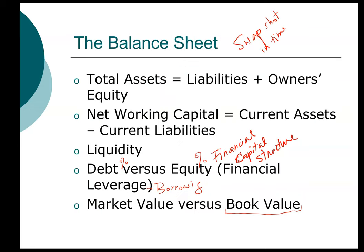That brings us back to the concept of book value. Book value is the value presented on the balance sheet based on the original purchase price and other accounting rules — it is a historic record of the value of the assets and liabilities of the firm. Market value, just as the name implies, is the current value. Book value is important from an accounting standpoint because you want an accurate historic record of the firm's purchases and disposal of assets. On the other hand, if you're looking at financial data to make decisions about the future direction of the firm, market value is more relevant.